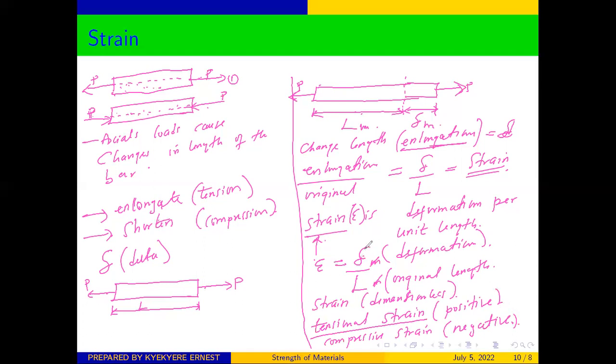Take note that this formula for strain is only useful when the deformation or the change in length or the extension is very small compared to the original length of the bar. Because the force or the loads which are applied are normal to the cross-section of the bar, this kind of strain is referred to as normal strain or axial strain because they are associated with normal or direct stresses.